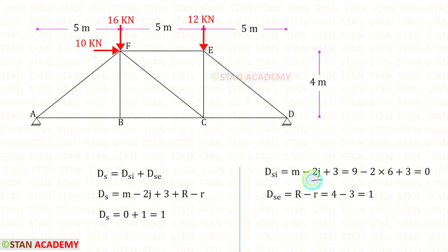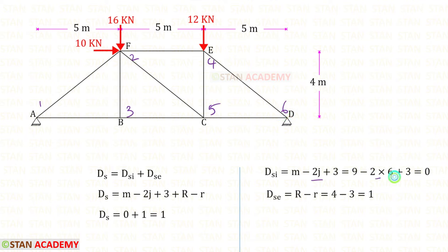J is the number of joints. Let us count the joints: 1, 2, 3, 4, 5, 6. J is 6. For DSI, we will get 0.